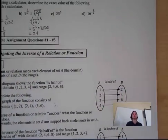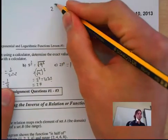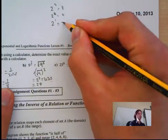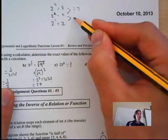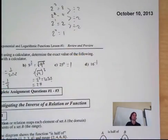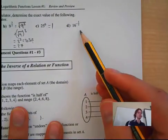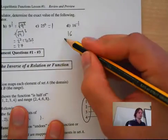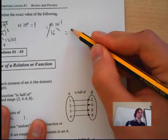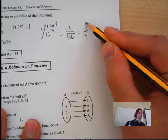25 to the 0: anything to the power of 0 is equal to 1. To prove it: 2 to the 3 is 8, 2 squared is 4, 2 to the 1 is 2 — we're dividing by 2 each time, so 2 to the 0 is 1. Next, 16 to the negative one-half: that's 1 over 16 to the one-half, which is 1 over the square root of 16, and the square root of 16 is 4, so the answer is 1 over 4.